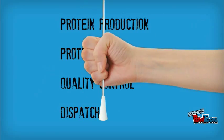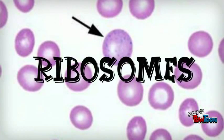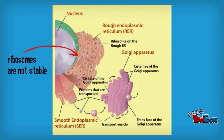As mentioned before, it is studded with protein manufacturing ribosomes. However, the ribosomes bound to the RER at any one time are not a stable part of this organelle structure, as ribosomes are constantly being bound and released from the membrane.